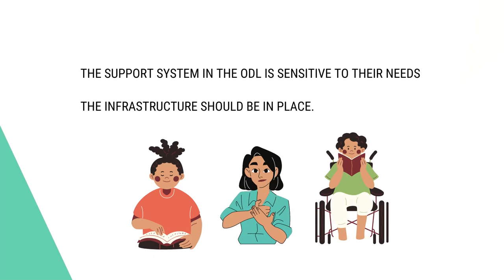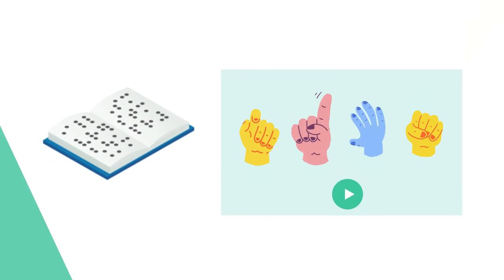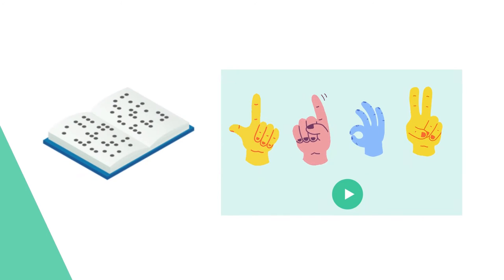In the open and distance learning system, people with disabilities can only succeed if the people in the support system are sensitive to their needs, and the infrastructure is properly in place. The resources in the open and distance learning system should be properly designed so that people with disabilities can access these materials without any outside assistance.